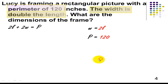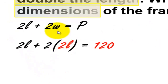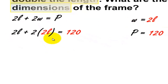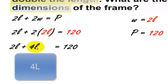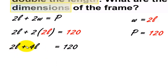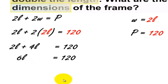The question is, what are the dimensions of the frame? Let's start with the formula. We are going to replace W by 2L. So 2L plus 2 times 2L, simplifying 2 times 2L gives us 4L. These two are like terms, so 2L plus 4L is equal to 6L equals 120.